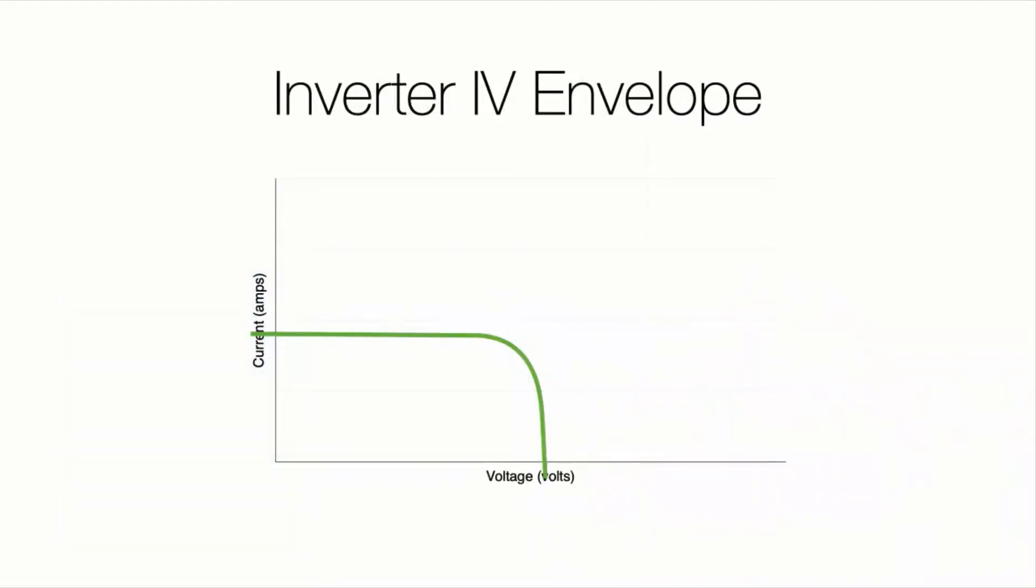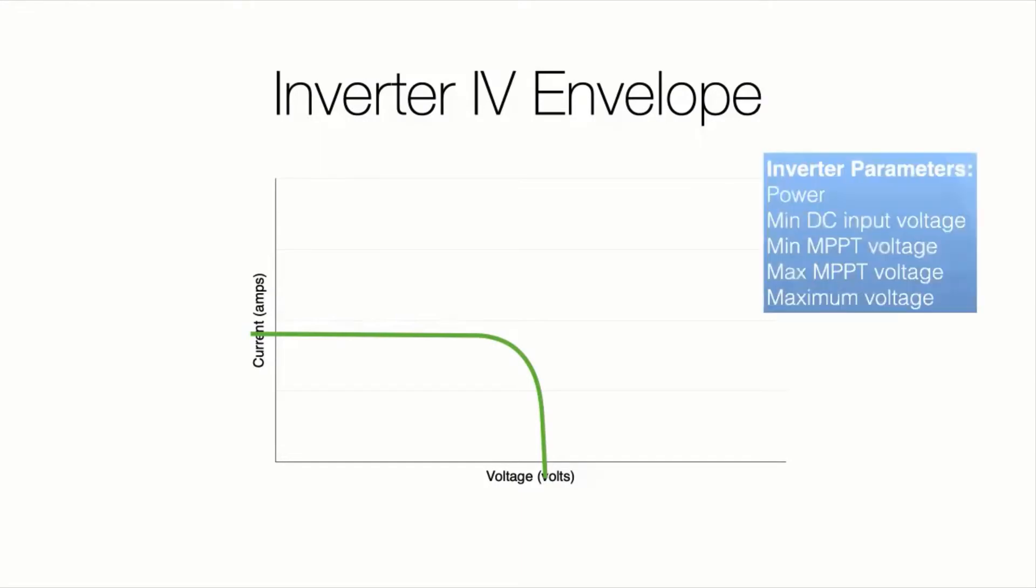And one interesting point here, I can create an inverter IV curve, really call it an IV envelope. I can do that based on the parameters of a typical inverter. I can have a minimum voltage operating for the inverter and a maximum voltage. This gives me my operational window that the inverter is designed to work in. And it will have a minimum max power tracking point and a maximum max power tracking point.